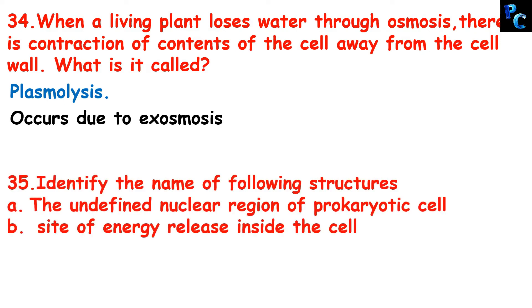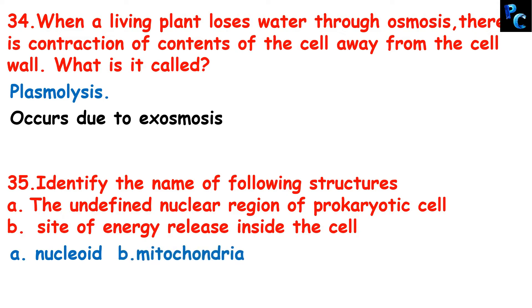Identify the name of the following structures. The undefined nuclear region of a prokaryotic cell — it is called nucleoid. And the site of energy release inside the cell — it is the mitochondria, because it produces ATP, the energy currency.